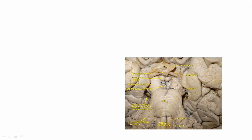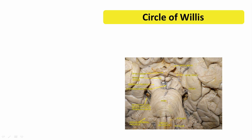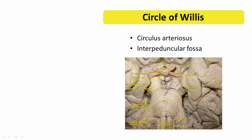Let us now go into the details of where it is located — the anatomy and the clinical significance of circle of Willis. Circle of Willis, also known as circulus arteriosus, is located in the interpeduncular fossa. In the image shown here, this is the pons — the brainstem — and we have two cerebral peduncles on the lateral aspects. This space between them is the interpeduncular fossa.